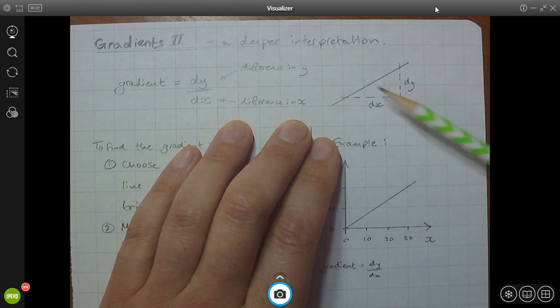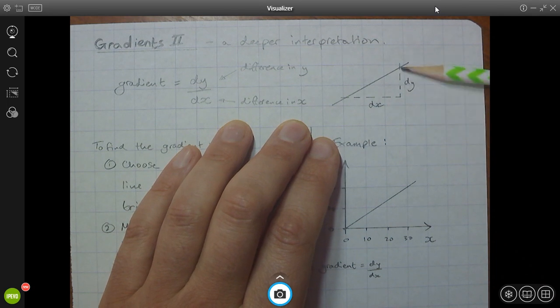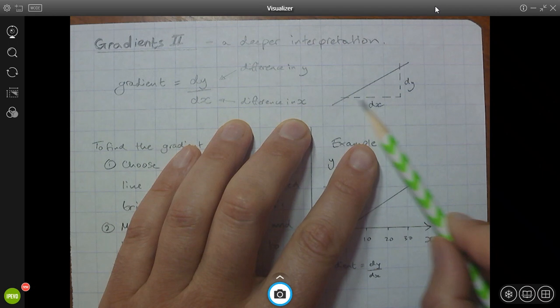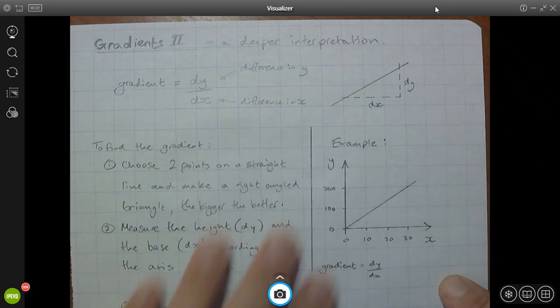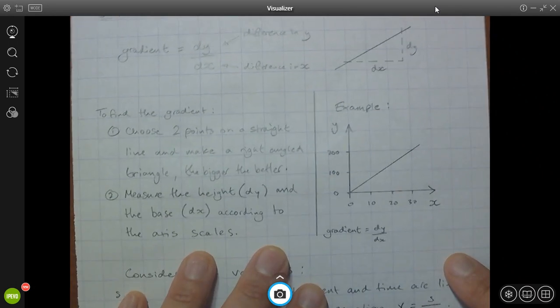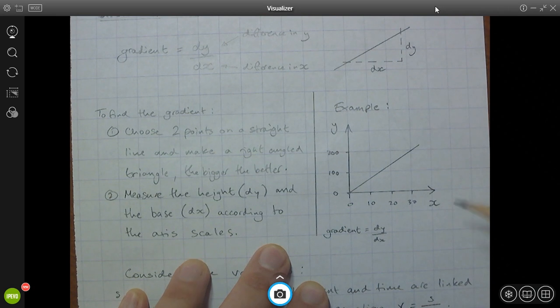And it's just like the slope of a triangle. So the dy, the difference in y, is the height of this right-angled triangle, and dx is the base of this triangle. And we're going to apply this to a graph. So this is how we would do this. This is the method.